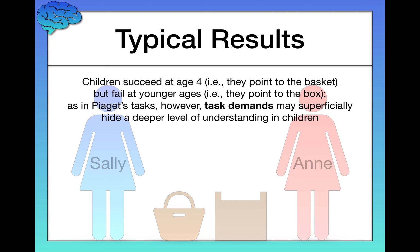But as we saw with the Piagetian tasks, task demands are an issue here, meaning there's a lot going on in this situation. There are at least five different key people and objects to pay attention to. People are leaving the scene and coming back. The object is moving locations. There's a lot to ask of the child — they have to keep track of everything in the story, then respond to your question, point to the basket or the box, and make a decision. So we may superficially be hiding a deeper level of understanding in children. It's possible that children do understand Theory of Mind at a younger age, but we're masking it with task demands.